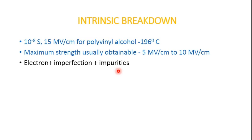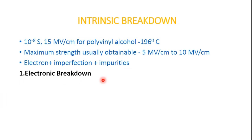Based on this there are two principles that explain intrinsic breakdown: the first is electronic breakdown and the second is avalanche or streamer breakdown. These are analogous to how conduction takes place in the gas breakdown phenomenon.